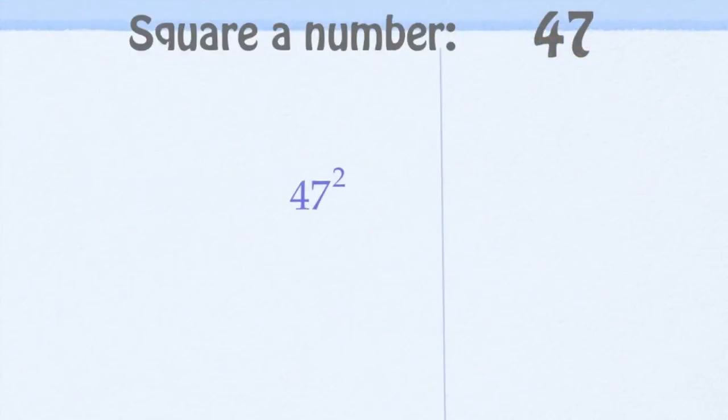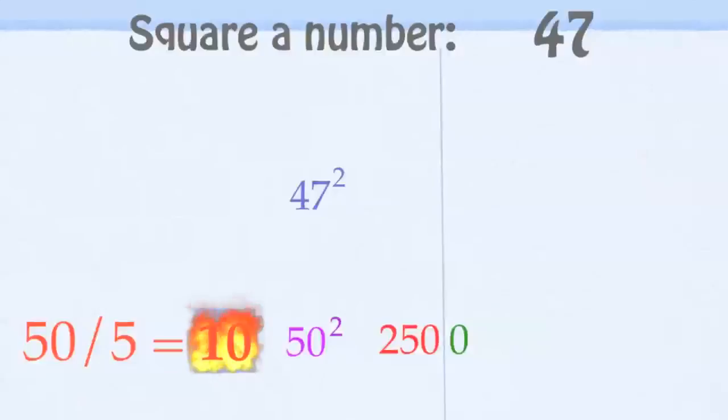Now let's take a bigger number, like 47. Now 47, we can go up to 50 and square that. That's easy, that's 2500. And we take our 10's digits, it's 250, and then 50 divided by 5 is 10.